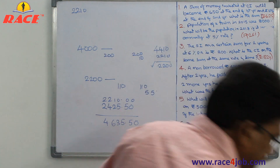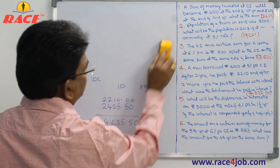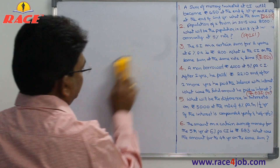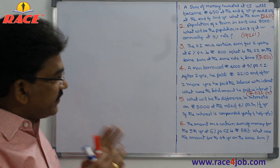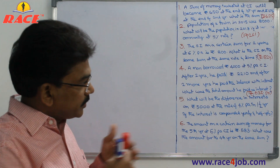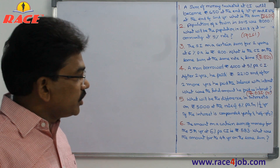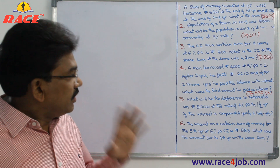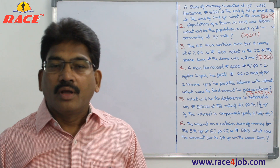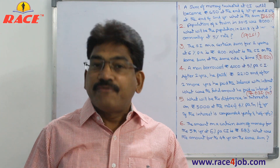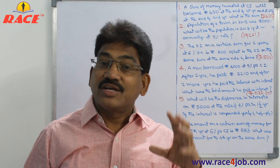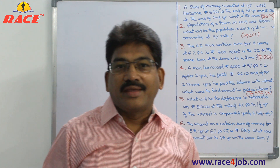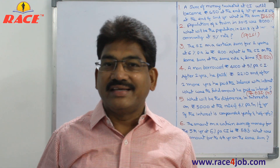Now let us see the next question. What will be the difference in interest on 5,000 rupees at 4% per annum for one and a half year if the interest is compounded yearly versus half-yearly? 5,000 rupees at 4% rate — if we calculate yearly for one and a half year, what is the interest? And what is the difference when calculated yearly versus half-yearly?